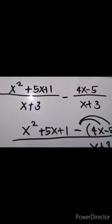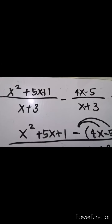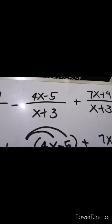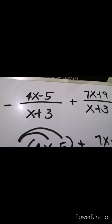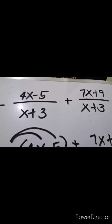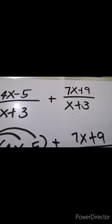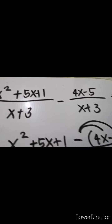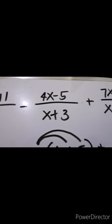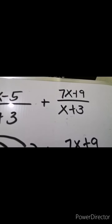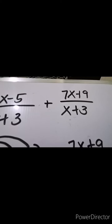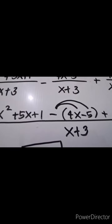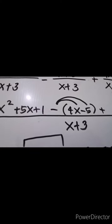We have the given: x squared plus 5x plus 1 over x plus 3, minus 4x minus 5 times x over x plus 3, plus 7x plus 9 over x plus 3. As you can see, we have the same denominator. When the denominator is the same, just copy the denominator and perform the operation in the numerator.